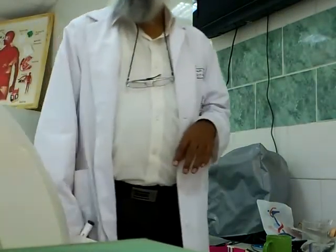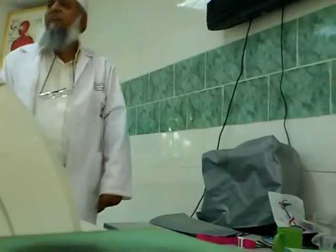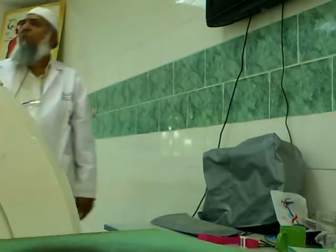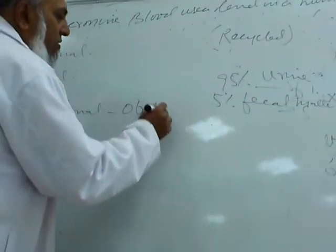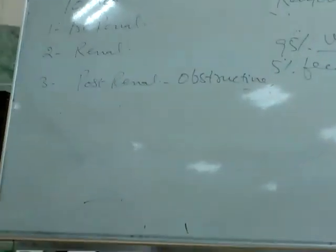Renal causes are conditions directly involving the kidney and affecting its function, such as glomerulonephritis, nephrotic syndrome, pyelonephritis, or any congenital problem of the kidney. Post-renal conditions are those in the urinary tract but outside the kidney — in the ureter, urinary bladder, or urethra — usually obstructive conditions blocking urinary outflow, such as stones in the ureter or urinary bladder.